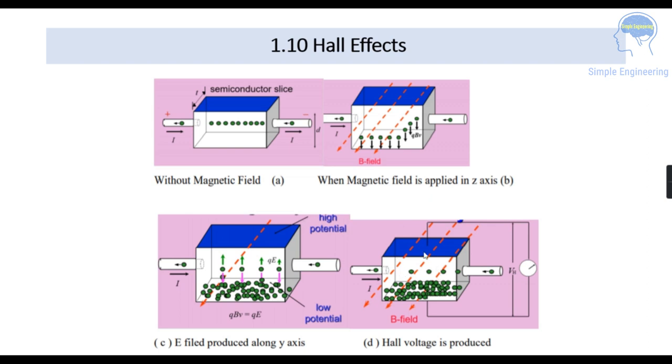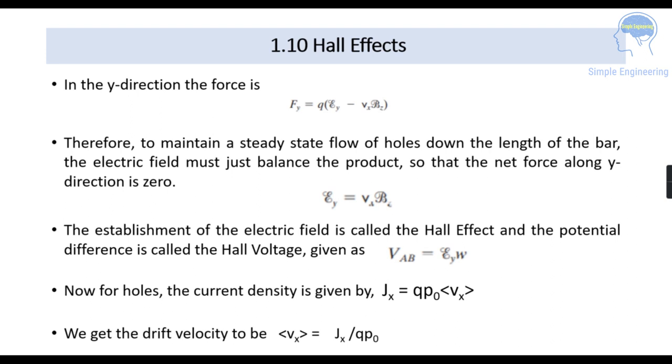So after the Hall voltage is produced figure D shows after the generation of the Hall voltage. So in the Y direction there will be a force that is equal to Fy = q(εy - vx·Bz). In order to maintain a steady state flow of holes through the length of the bar, the electric field must balance the product. So that the net force along the Y direction will be equal to 0. So εy that is the net force along Y direction that should be equal to 0. The electric field that we are applying in the Y direction is denoted as εy which is equal to vx into Bz.